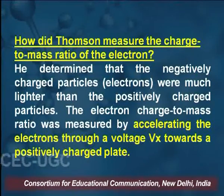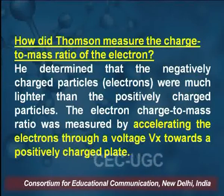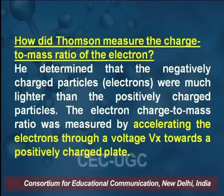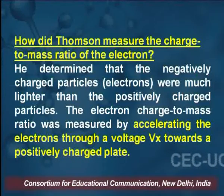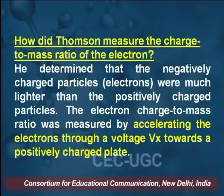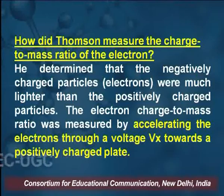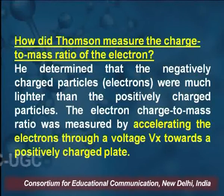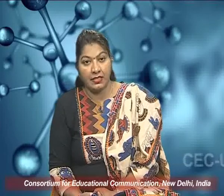The second question may be: how did Thomson measure the charge-to-mass ratio of the electron? Thomson discovered negatively charged particles called electrons, which are much lighter than positively charged particles. The electron charge-to-mass ratio was measured by accelerating the electrons through voltage V.